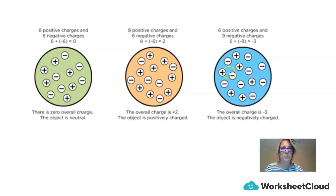If we have a look at this blue material, we have six positive charges and nine negative charges. So if we take six positive charges and add nine negative charges, we get negative three. That means the overall charge on the blue substance is negative three, which means this object is negatively charged.